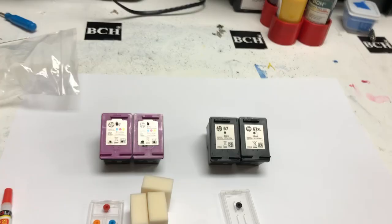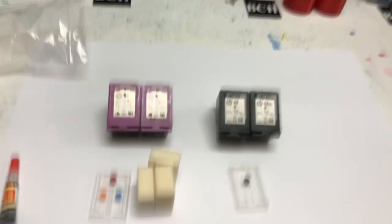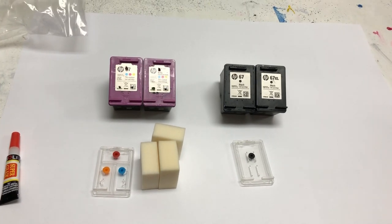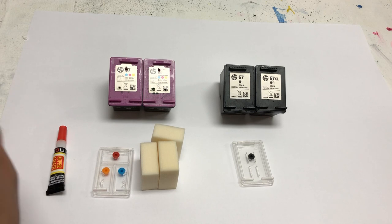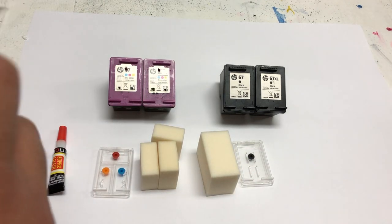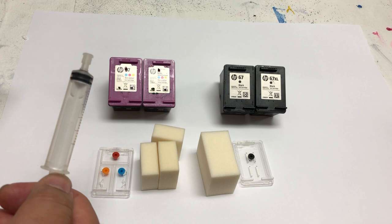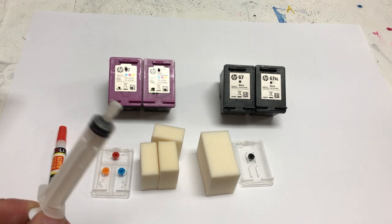This kit has a clear cover, one for the color, one for the black, and it has four sponges—three for the tricolor and one for the black.